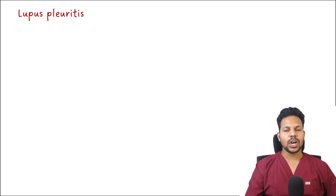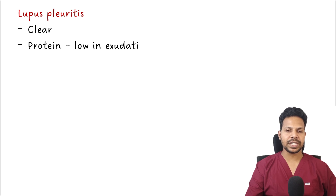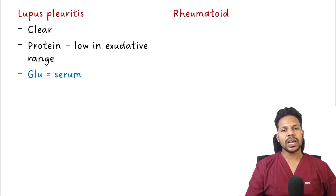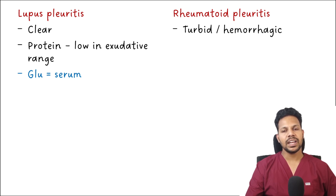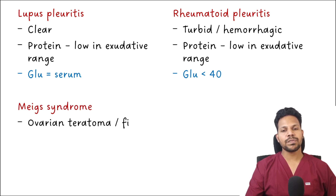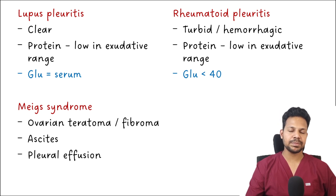Important specific causes: lupus pleuritis produces clear fluid with protein in the low exudative range and glucose equal to serum. Rheumatoid pleuritis produces turbid or hemorrhagic fluid with protein in the low exudative range and glucose less than 40 mg/dL. Meig's syndrome is a triad of ovarian teratoma or fibroma, ascites, and pleural effusion. That concludes this discussion on pleural effusion — please share and subscribe to the channel.